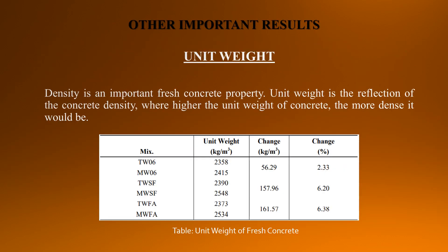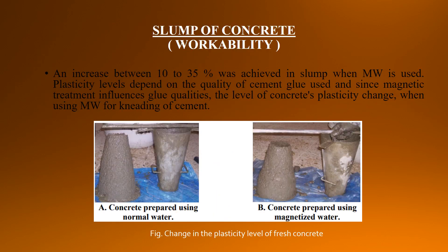Other important results. Unit weight density is an important fresh concrete property — it is a reflection of concrete density, where higher unit weight means more dense concrete. The table consists of unit weight of fresh concrete. For slump of concrete, an increase between 10 to 35% was achieved in slump where magnetized water is used. Plasticity level depends on the quality of cement glue used, and since magnetic treatment influences glue qualities, the level of concrete plasticity changes when using magnetized water. Figure A shows concrete prepared using normal water, and Figure 2 shows concrete prepared using magnetic water.